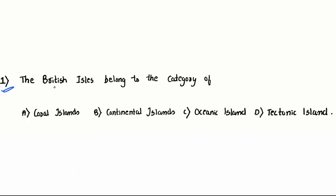The first question: The British Isles belong to the category of — Coral Islands, Continental Islands, Oceanic Islands, or Tectonic Islands? British Isles belong to the category of Continental Islands.